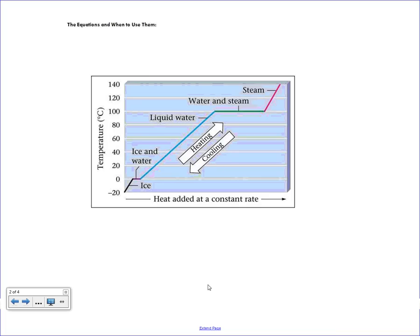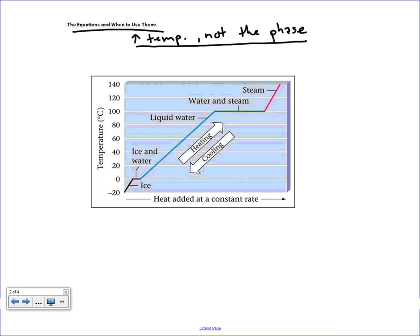We're going to apply these vocabulary terms to the phase change diagram and introduce equations for when to use them. There are two situations you'll face in these calculations. The first is changing the temperature but not the phase — heating or cooling water, a gas, or a solid without changing what phase it's in. The second situation is changing the phase but not the temperature.